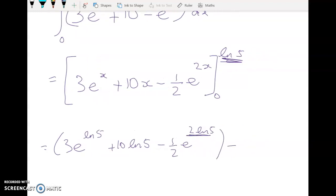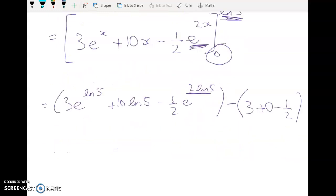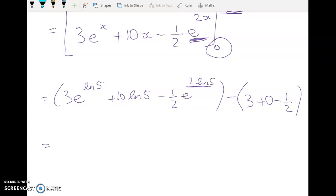And the other thing we've got to do is not just ignore the bottom limit, as some of you have a tendency to do, right? Because e to the 0 is not 0. So we've got minus 3 plus 0 minus a half of 1. So let's clean all of this up. Well, 3e to the log 5 is equal to 3 times 5. So 15 plus 10 log 5, minus a half of e to the natural log of 5 squared. So remember that we have to do the inversing, the e and the log undoing each other.